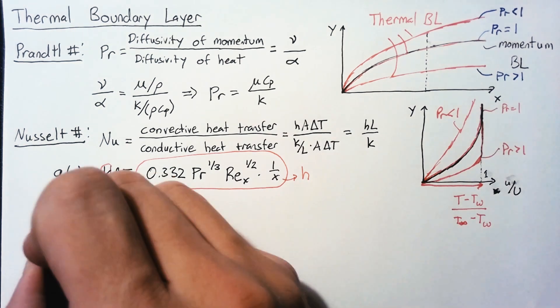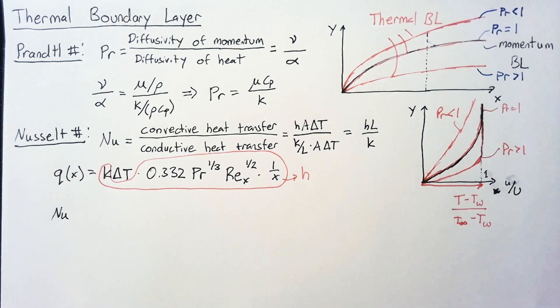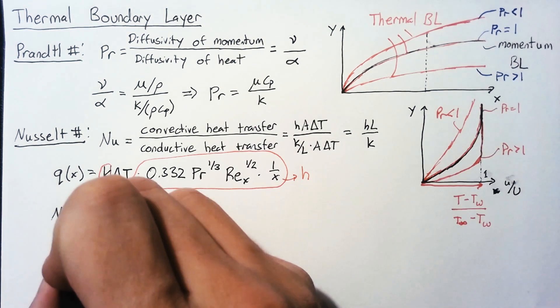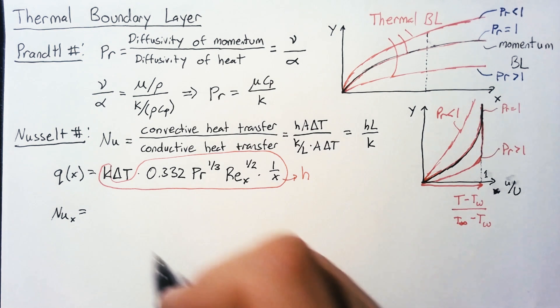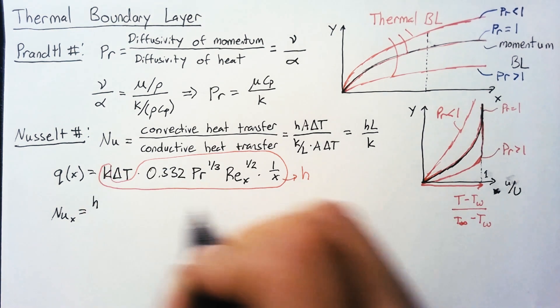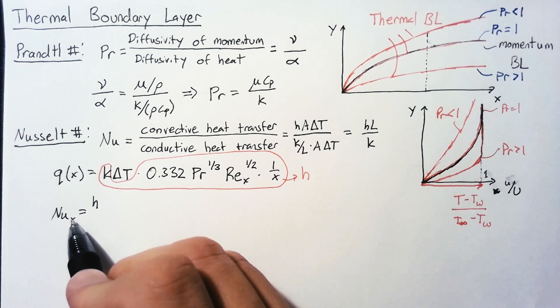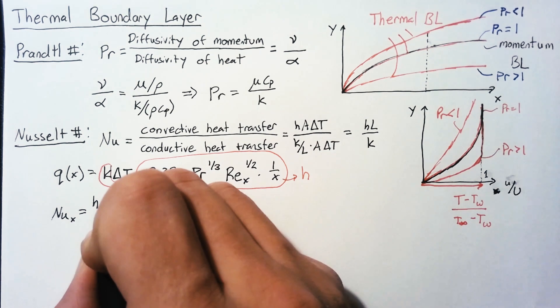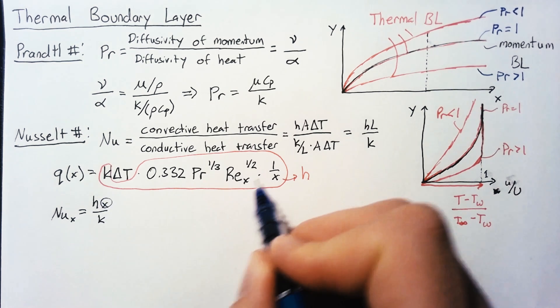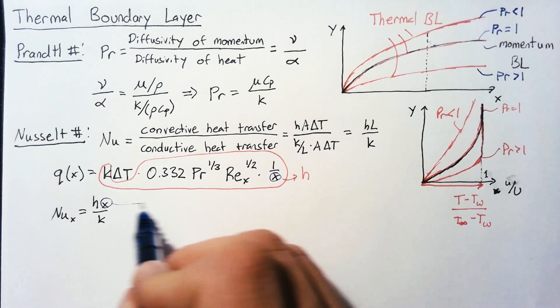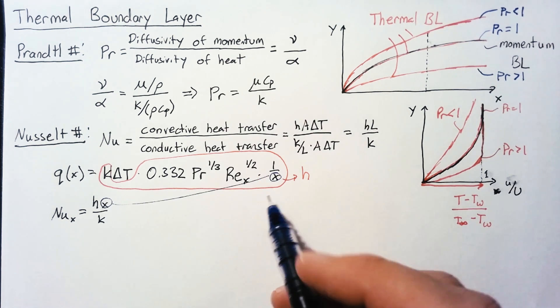Going back to our Nusselt number, this Nusselt number is going to be based off of the X in our equation, and it's equal to H times X over K. Looking at our two equations, we have an X in the numerator and one in the denominator, so those are going to cancel out. This K and this K are also going to cancel out.